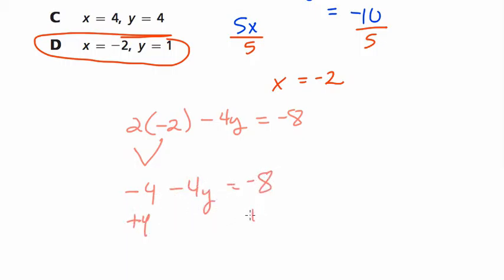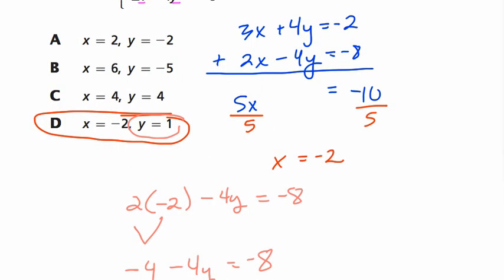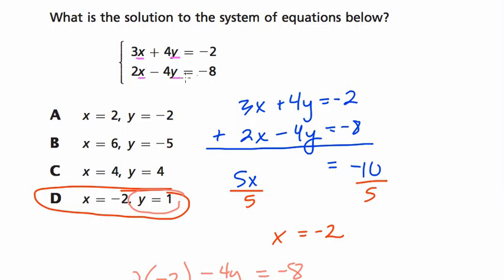Solving for y, we add 4 to both sides. And negative 4y equals negative 4. Negative 4 times something is negative 4. What's that got to be? Well, if we divide both sides by negative 4, y equals 1, which is our answer here.